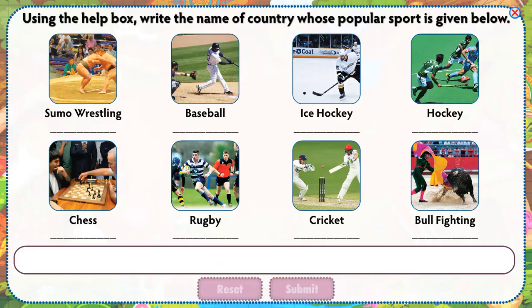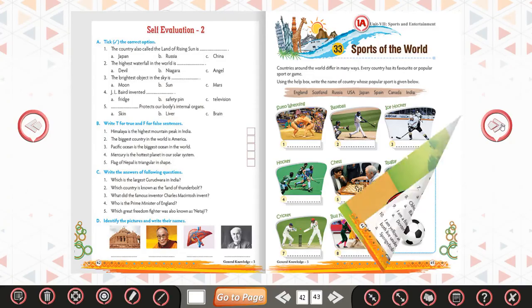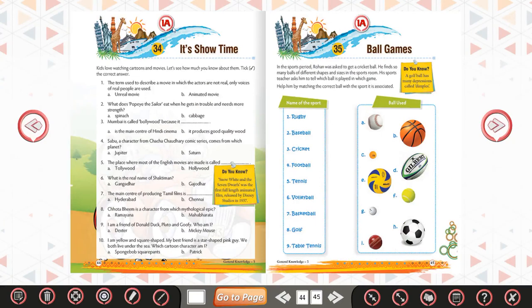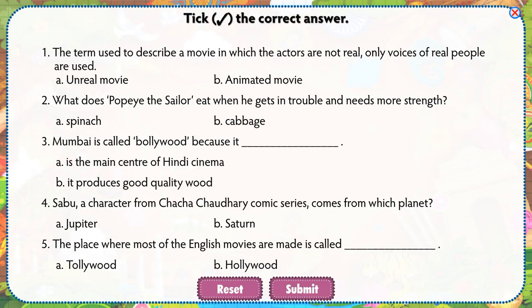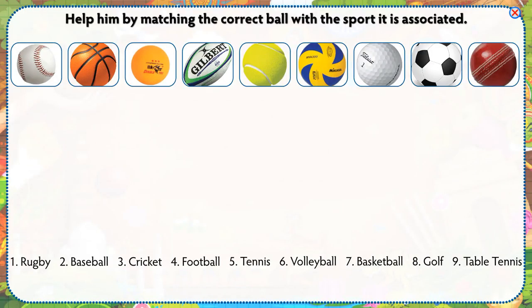Using the help box, write the name of the country whose popular sport is given below. Take the correct answer. Help him by matching the correct ball with the sport it is associated with.